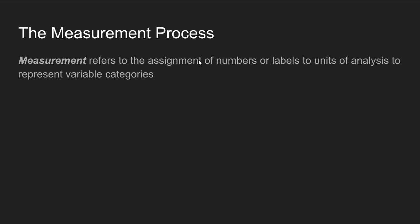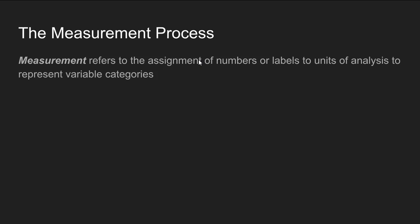Levels of measurement is an extension of the measurement process. Measurement refers to when we assign numbers, labels, or categories to units of analysis to represent variable categories. So we might measure characteristics of people as different variables, and those variables can take on values or categories that we'll use to represent empirical indicators of concepts in our research study.